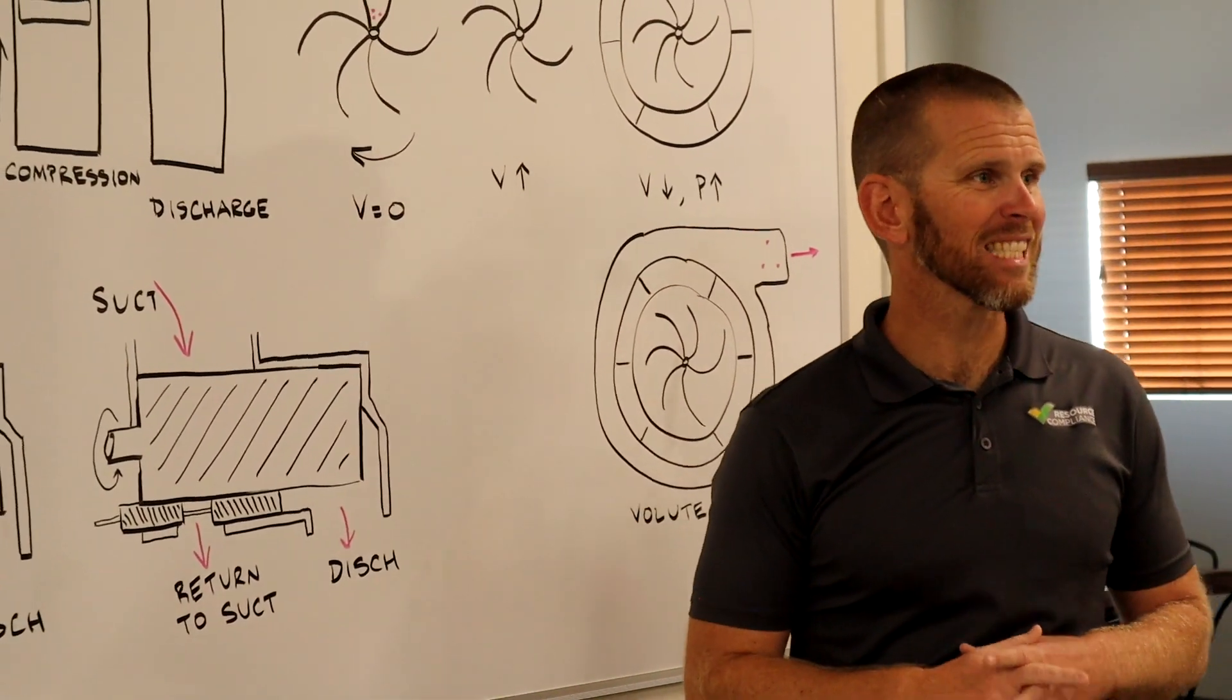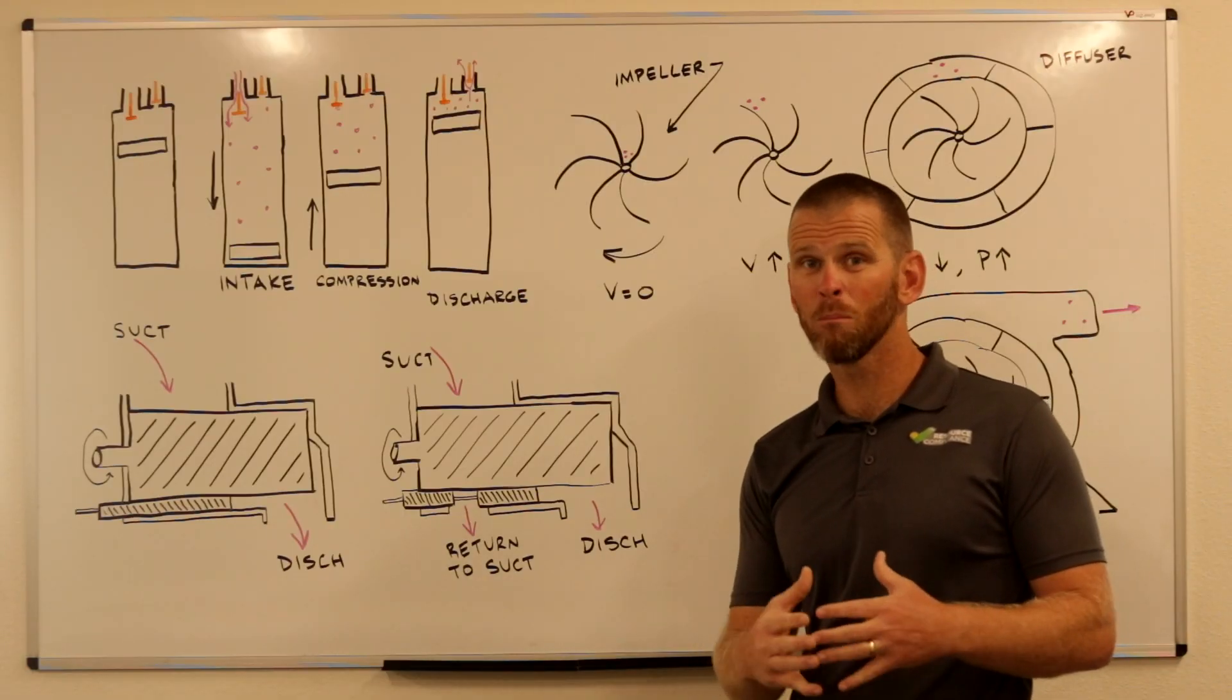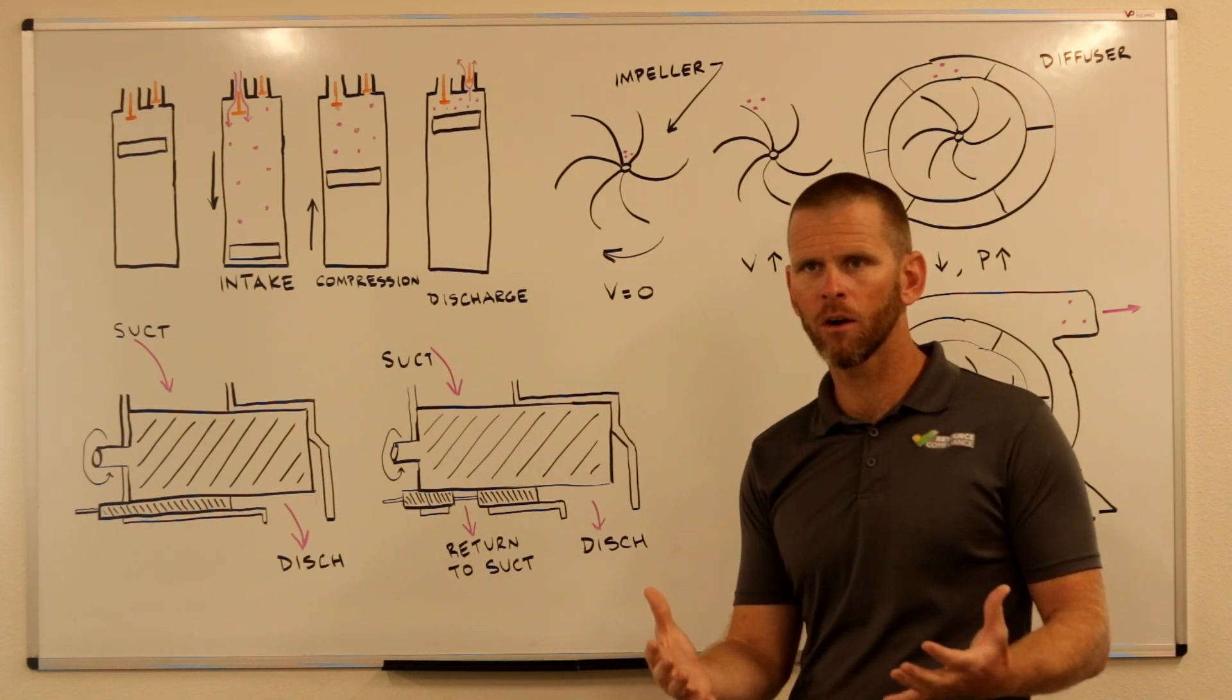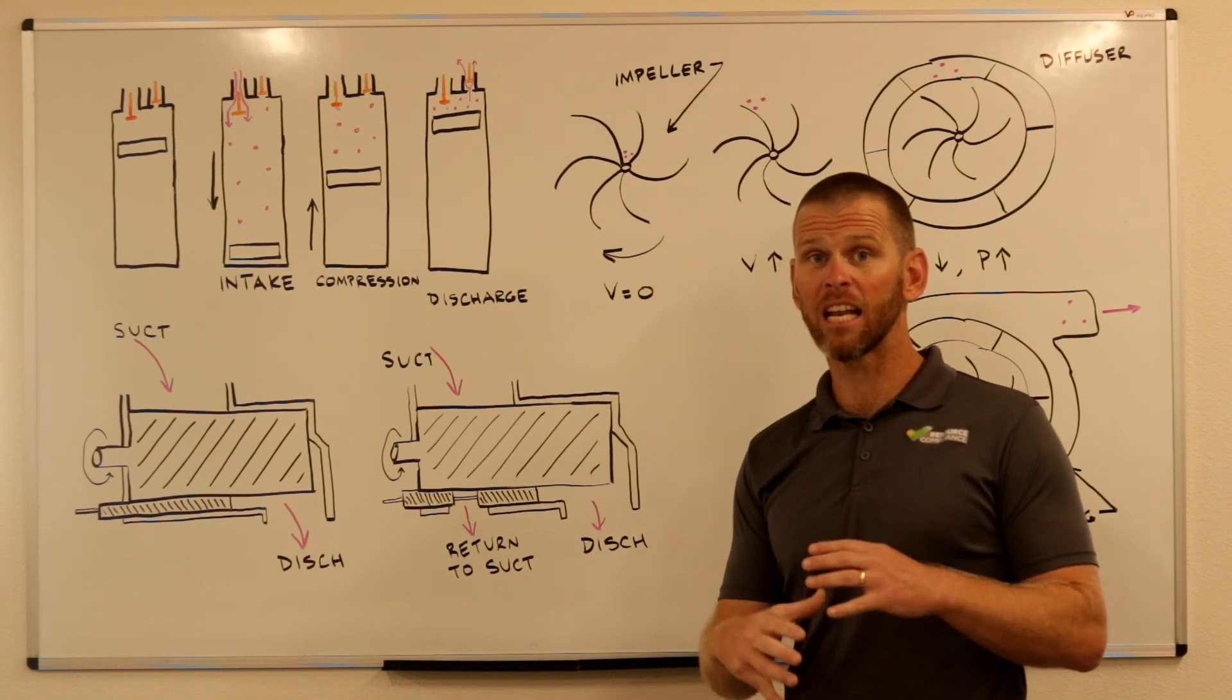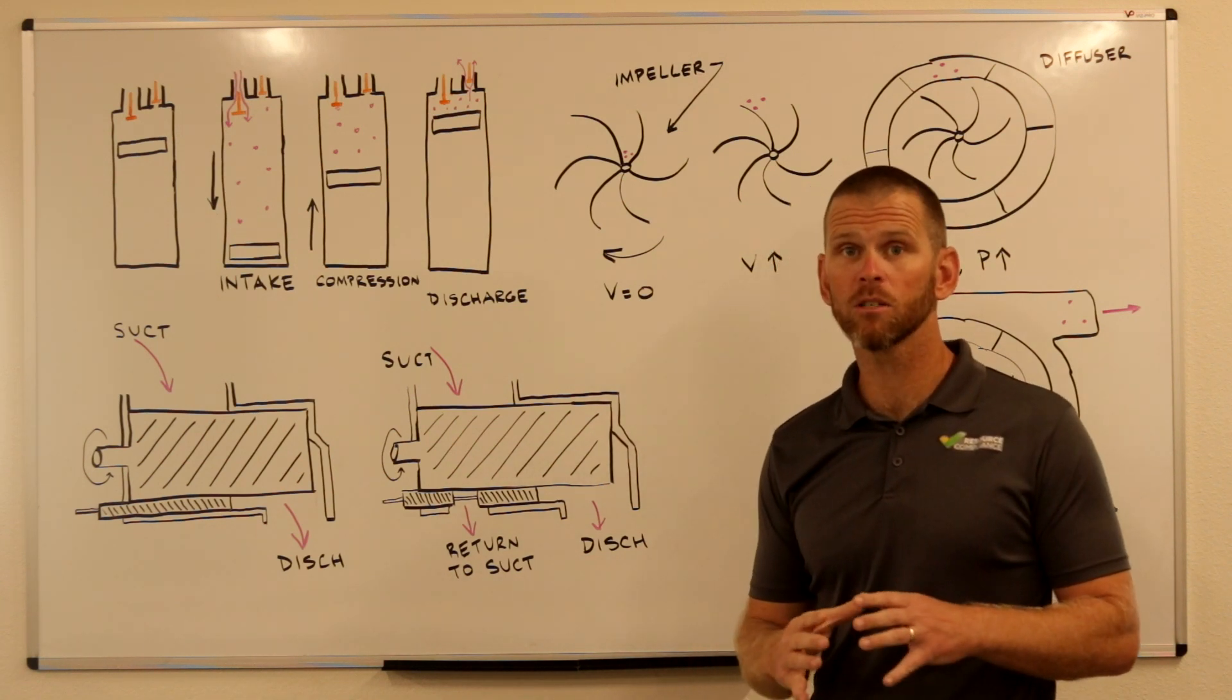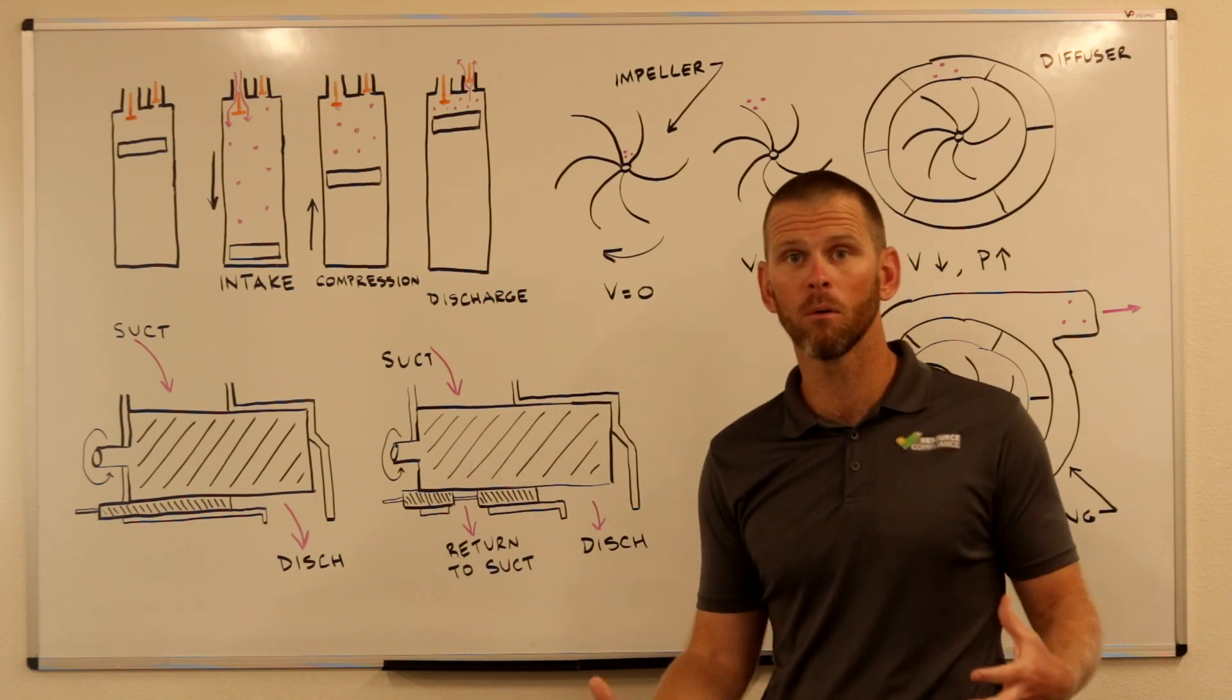It's similar to forcing the suction valve open in a reciprocating compressor. But by moving that slide all the way to the right and sealing that off now, there is no trap door available anymore, so we'd be getting full compression. When we're talking about slide valves, they're usually monitored by the percentage that they are closing the opening. If a slide valve is at 100%, that means the compressor is operating at full capacity or its full compressing potential.